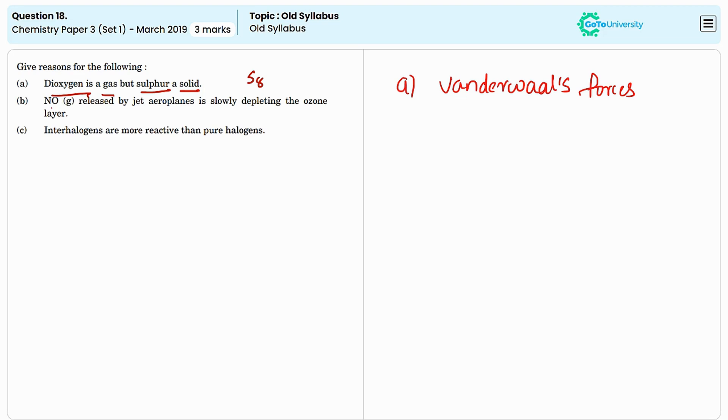The second one is, nitrogen monoxide gas released by jet aeroplanes is slowly depleting the ozone layer. This is again a correct statement. The nitrogen monoxide is contributing to the depletion of the ozone layer as per the given equations. The first step is, nitrogen monoxide reacts with oxygen in the atmosphere to produce nitrogen dioxide NO2.